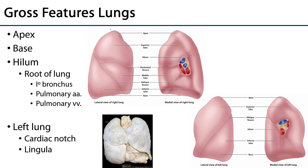Again, there are apices at the top that are going to be of the superior lobes. There are bases or diaphragmatic surfaces on the bottoms, which are largely associated with the inferior lobe, but on the right side may partially be associated with that middle lobe. The mediastinal surface is what hosts the hilum.